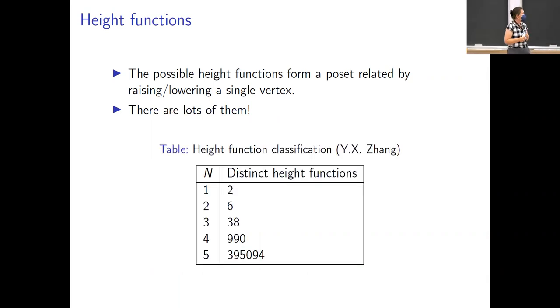So here's a table that was worked out by Y. You can see that already in dimension five we have 395 some thousand of these things. On the other hand, this is not a very sophisticated classification of height function. This table here would say, for instance, if I relabel my bosons or if I switch bosons and fermions, it would give me a distinct height function because I technically put a vertex in a different place.